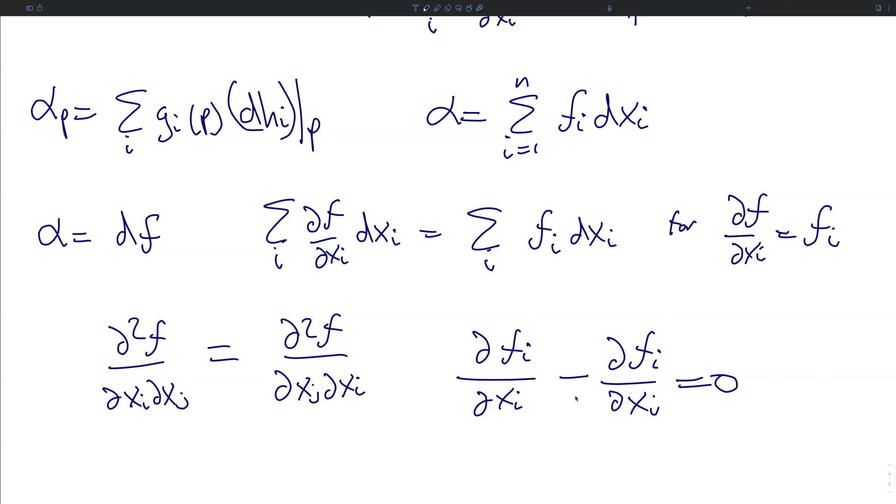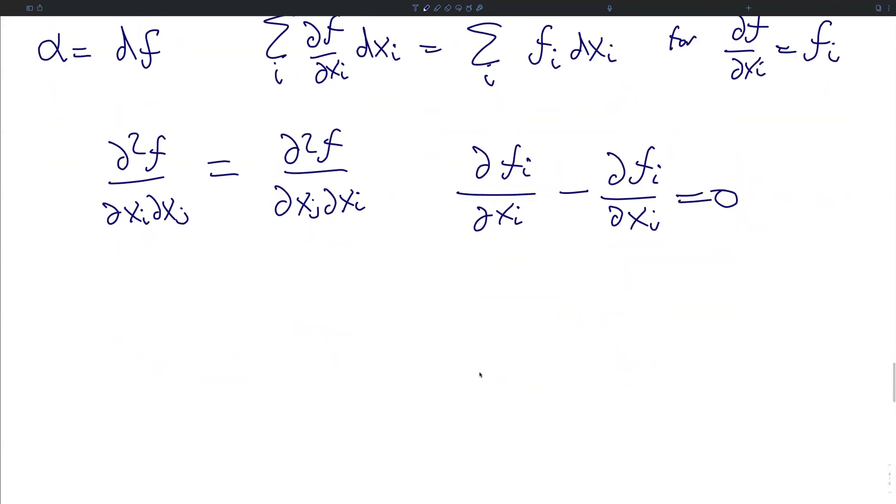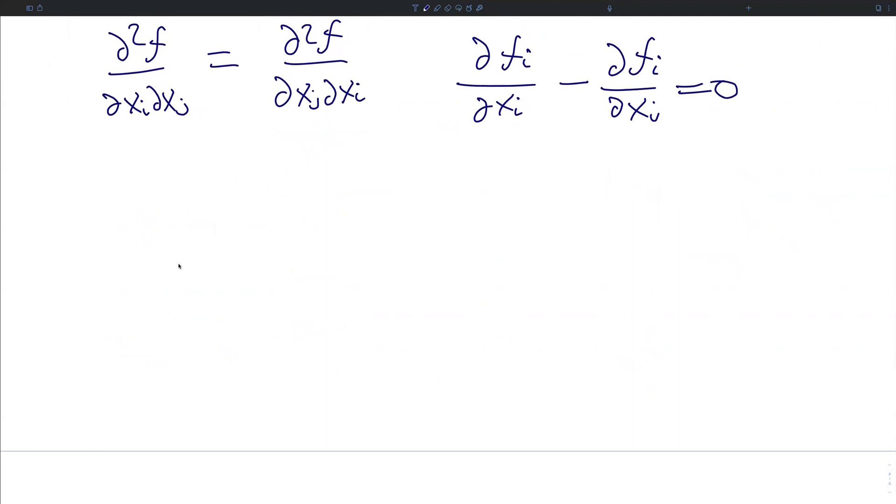And the reason why we are going through all of this is because we can, based on this, define a new operator. That is called the wedge product, otherwise known as an exterior product. This is, formally, an alternating bilinear form, and it's analogous to the outer product in linear algebra, but it's much more general.